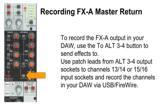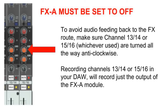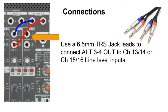Here's a simple workaround for recording the FX-A module's output in your DAW. After selecting the effect on FX-A, press the Alt-3-4 button to send the stereo output of FX-A into Alternate 3 and 4. Important: make sure the FX-A send for channels 13, 14, 15, or 16 — whichever you're using — is turned all the way down anticlockwise. Otherwise it will create audio feedback, because you will be feeding the output of FX-A back into FX-A. Once turned down, connect 6.5mm TRS jack leads from the Alternate 3-4 outputs into the inputs of channels 13, 14, 15, or 16.